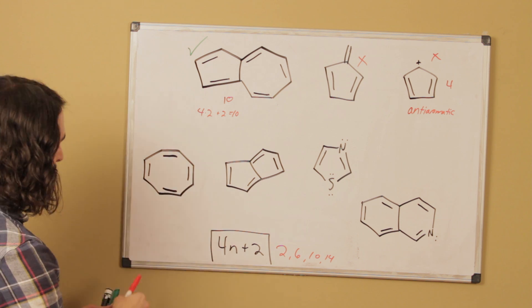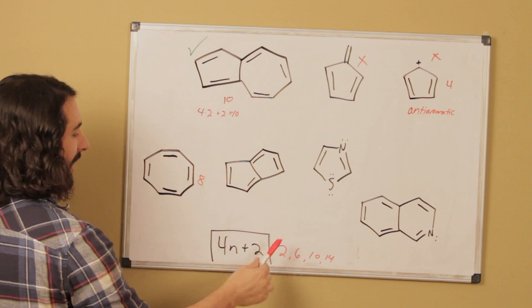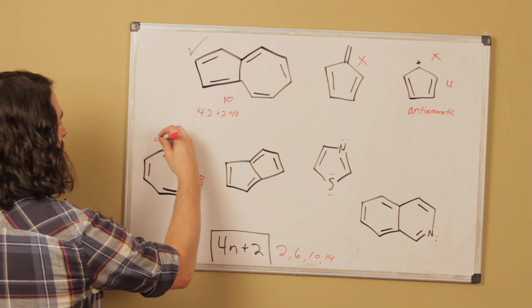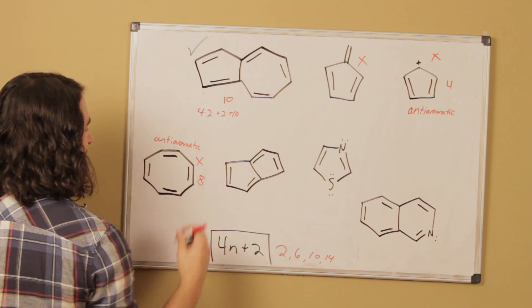However, when we add them up, 2, 4, 6, 8, that is 8 pi electrons. That does not satisfy Huckel's rule. So once again, that is going to be anti-aromatic. This one does not work.